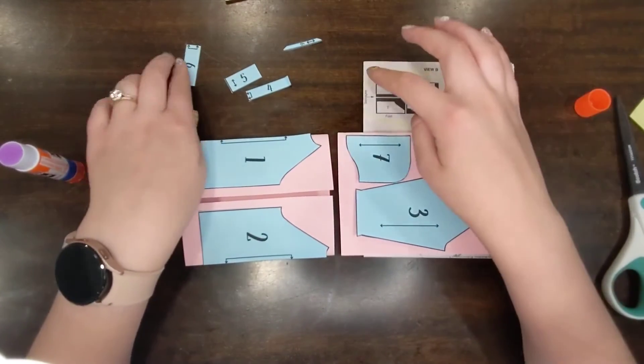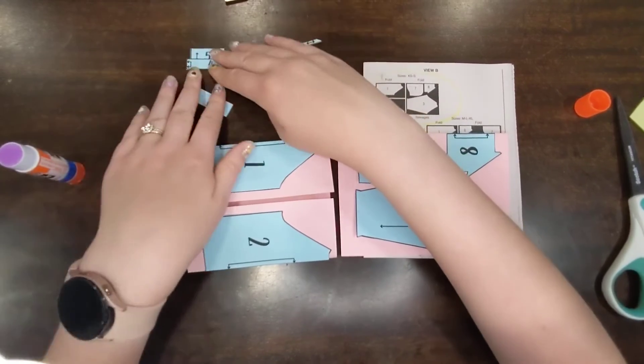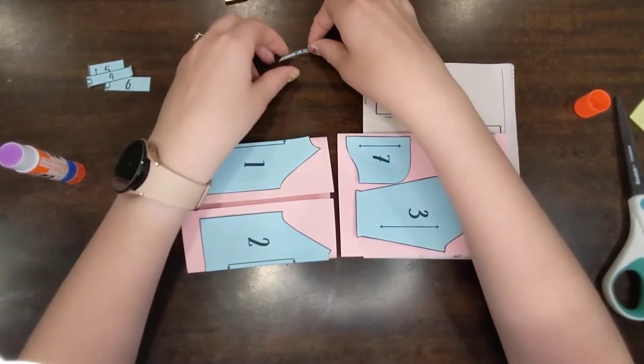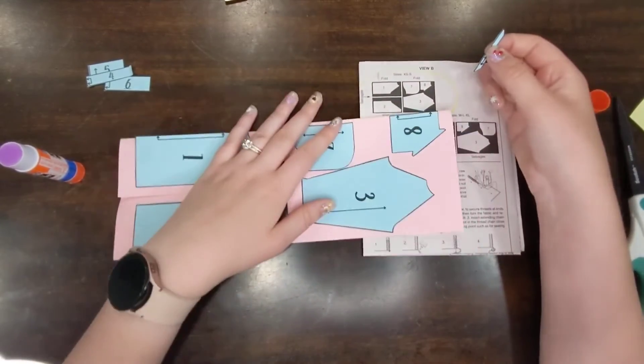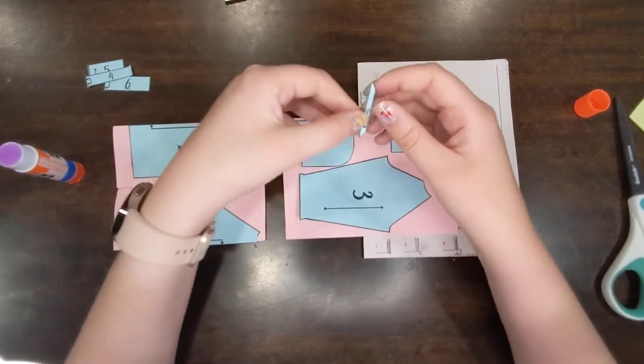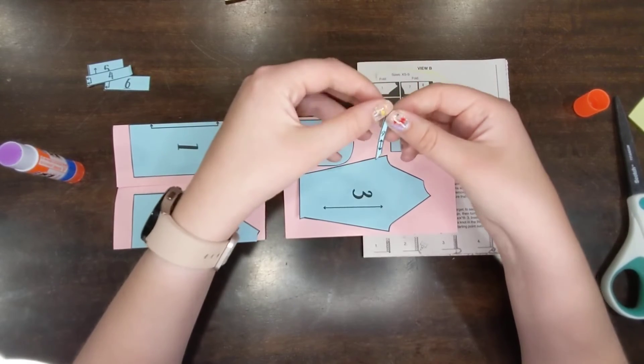And that's because pieces four, five, and six are only for view A. So I don't actually need them. I could just toss those, throw those away. Piece nine I do need. And I'm going to be using it for my interfacing, which I will cut out after I cut out these pieces. And it's just a different kind of fabric.